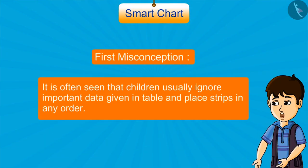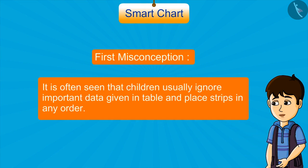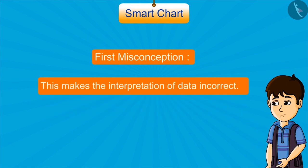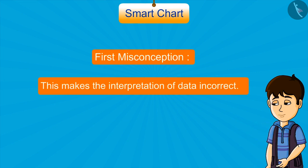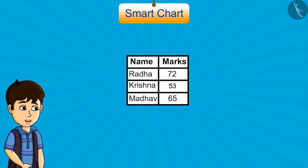It is often seen that children usually ignore important data given in the table and place strips in any order. This makes the interpretation of data incorrect. For example, look at this data.